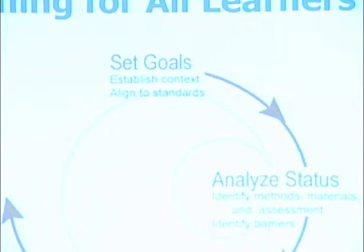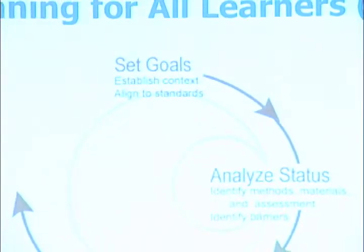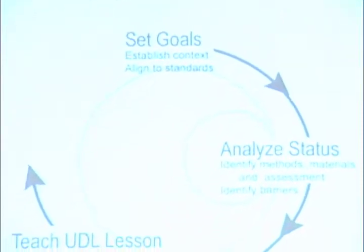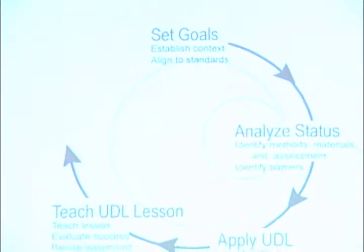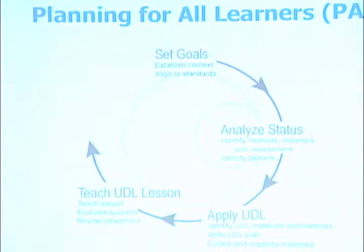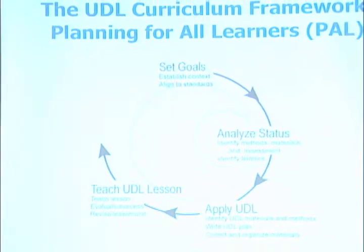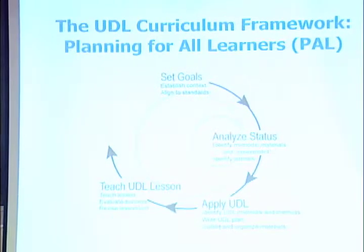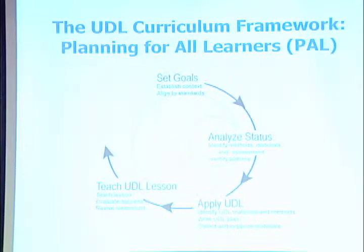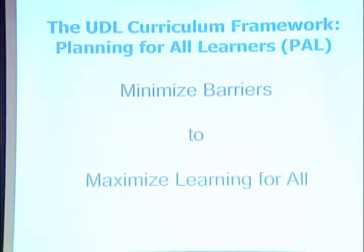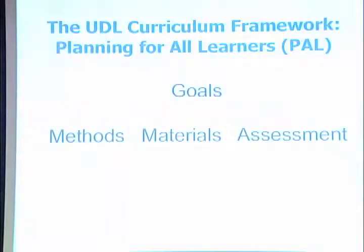Then you start by saying: what are my goals, what's the context, what's the learning experience? This is a recursive process — you analyze the current methods, materials, and assessments you're using, then think about what are the potential barriers. From the barriers you look at the UDL guidelines, you teach the lesson, you pause and reflect: did all my students achieve the goals? The UDL curriculum framework is planning for all learners — minimizing barriers and maximizing opportunities so that all students can achieve the goals.